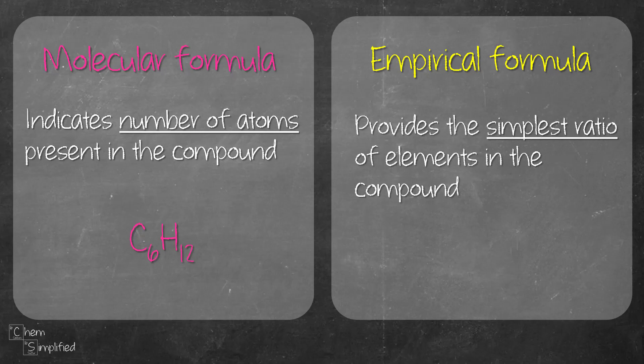Empirical formula on the other hand gives us the formula in the simplest ratio. Take that C6H12 molecular formula for example. If we reduce it down to the simplest ratio, we should get CH2. That's the empirical formula.